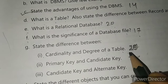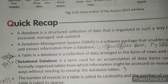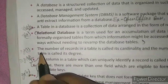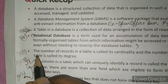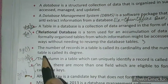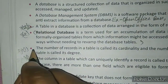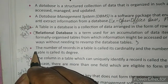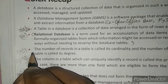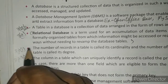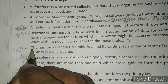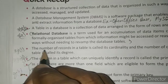The answer is on page number 28 in the quick recap — points one through five will form your answer. Write the heading: 'Difference between Cardinality and Degree of Table', and under this heading write the following.